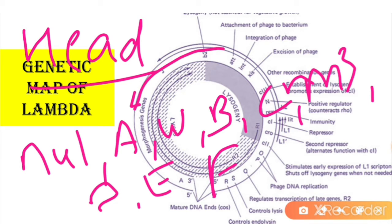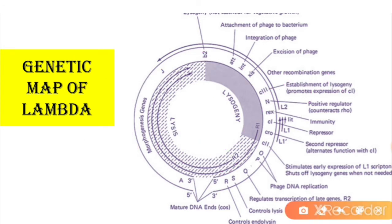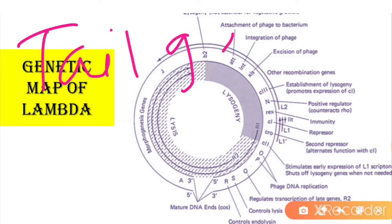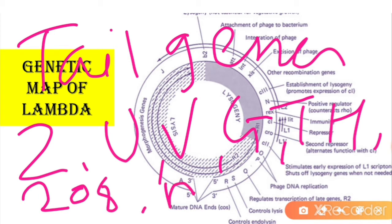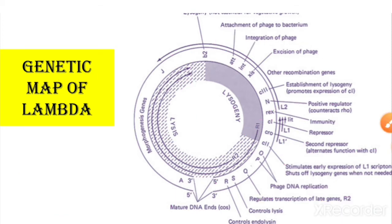The genes required for tail formation include: U, V, G, T, H, 208, M, L, I, and J. These tail genes are clustered at the right side of the lambda phage genetic map.